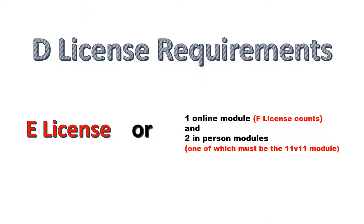D license requirements: if a candidate holds an E license, they are eligible to go directly for the D license. Otherwise, they must complete one online module — if you've completed the F license in the past, that will count as your online module — and two in-person modules, one of which must be the 11v11 module.